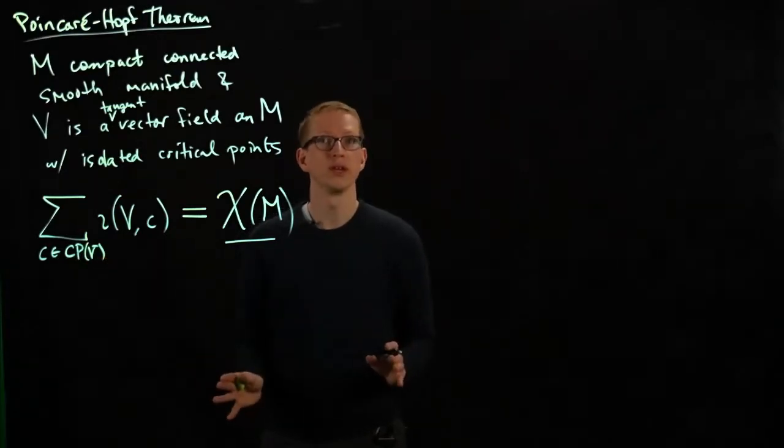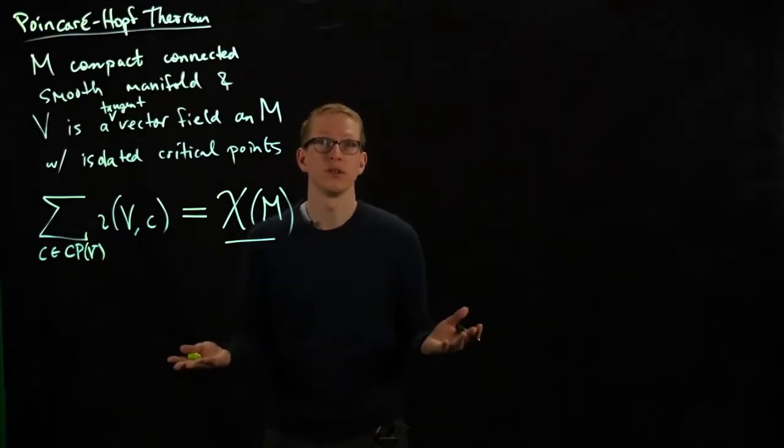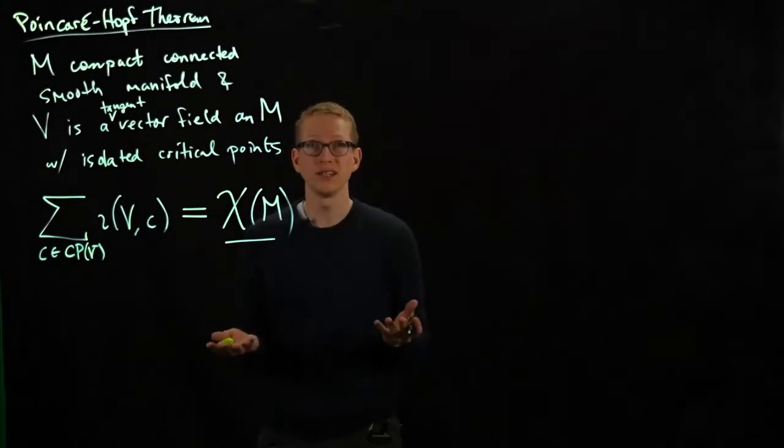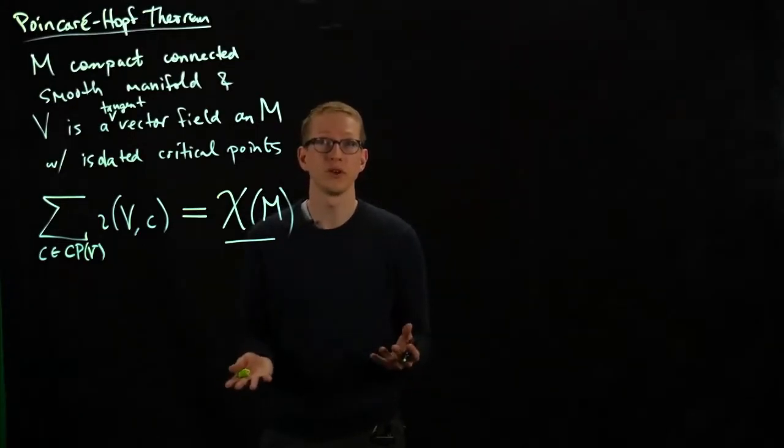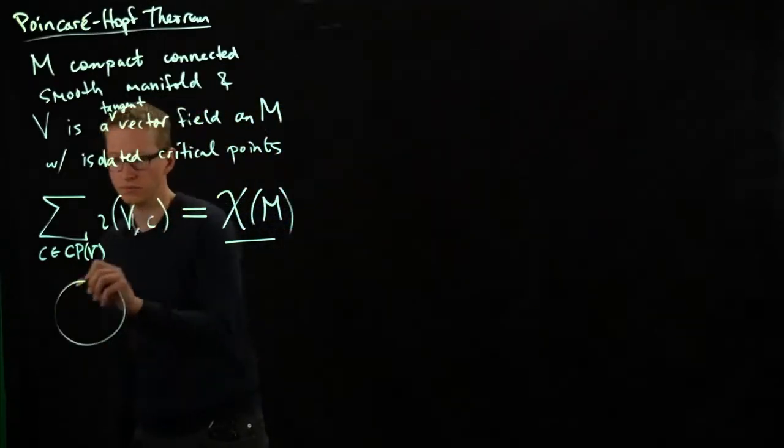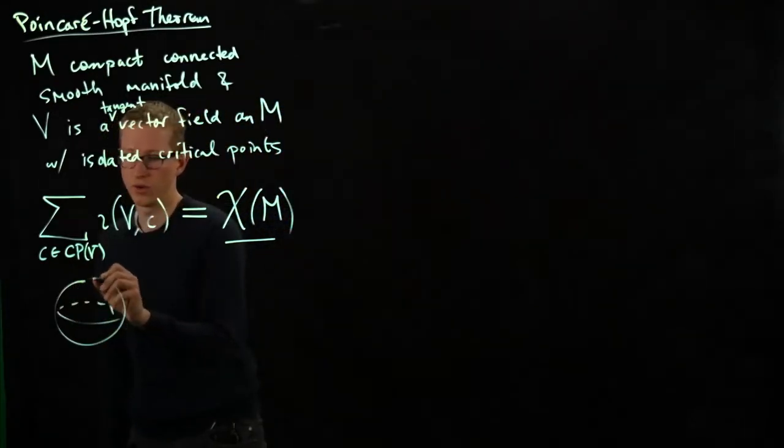Now this, of course, isn't true if I take two different vector fields with the same critical point, then the indices of each of those critical points are the same. That's obviously false. You can just look at the example on the sphere, which,